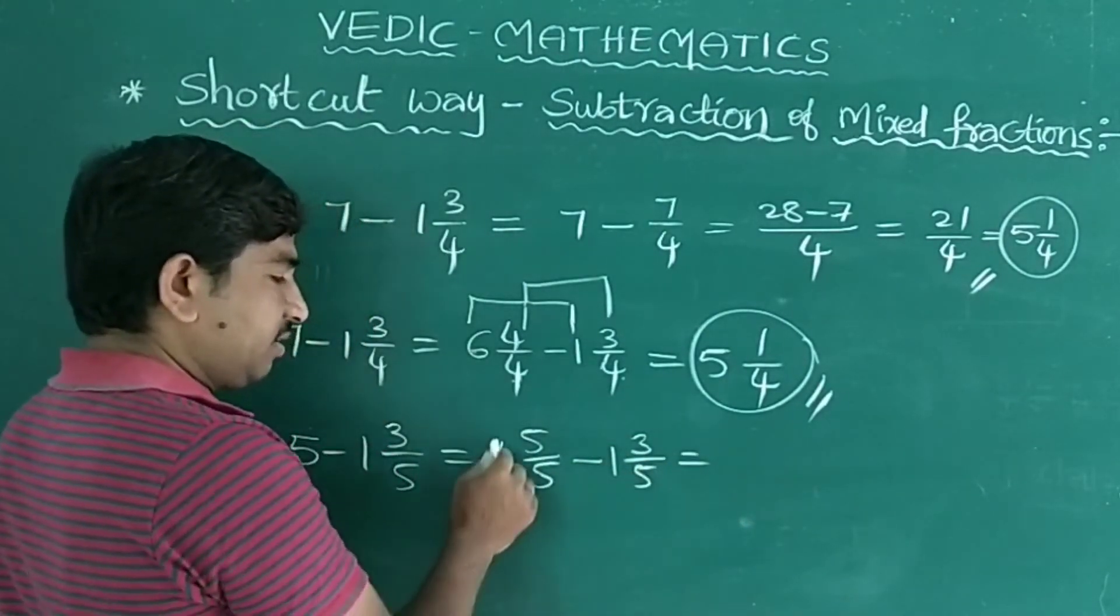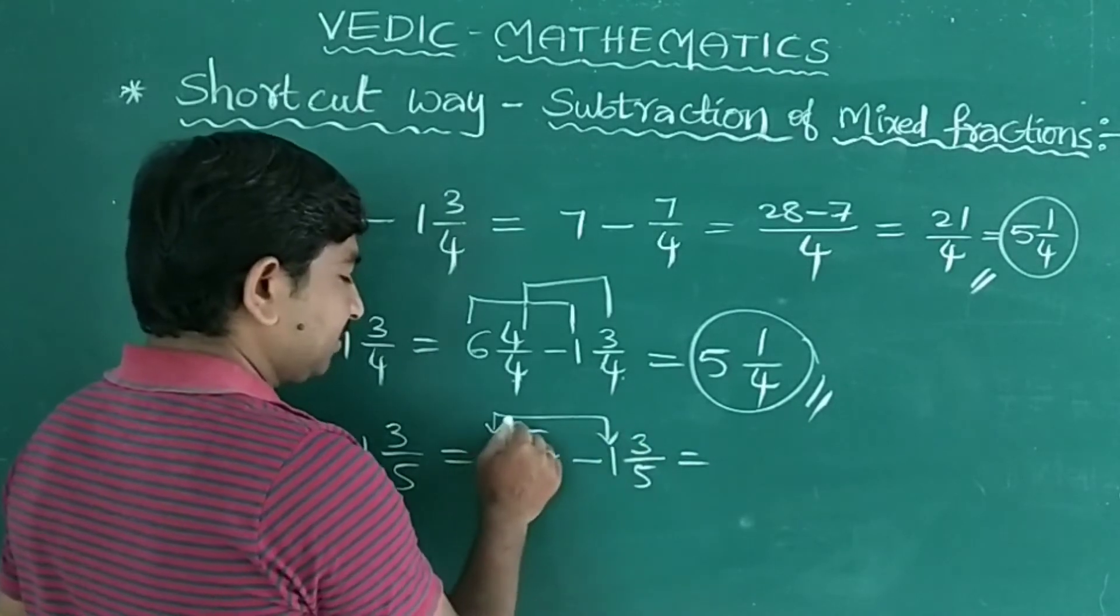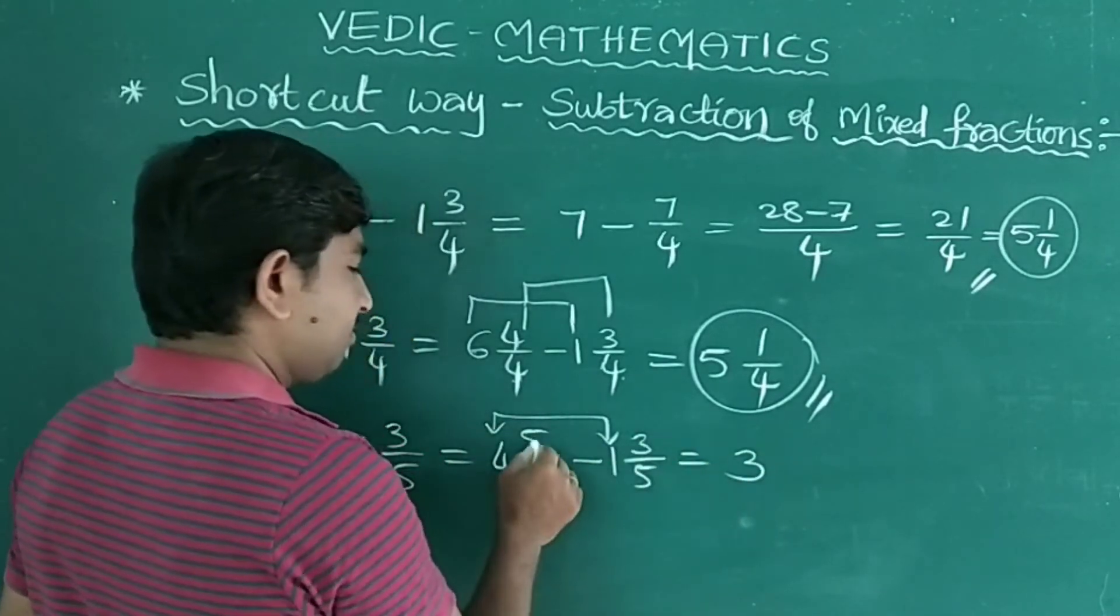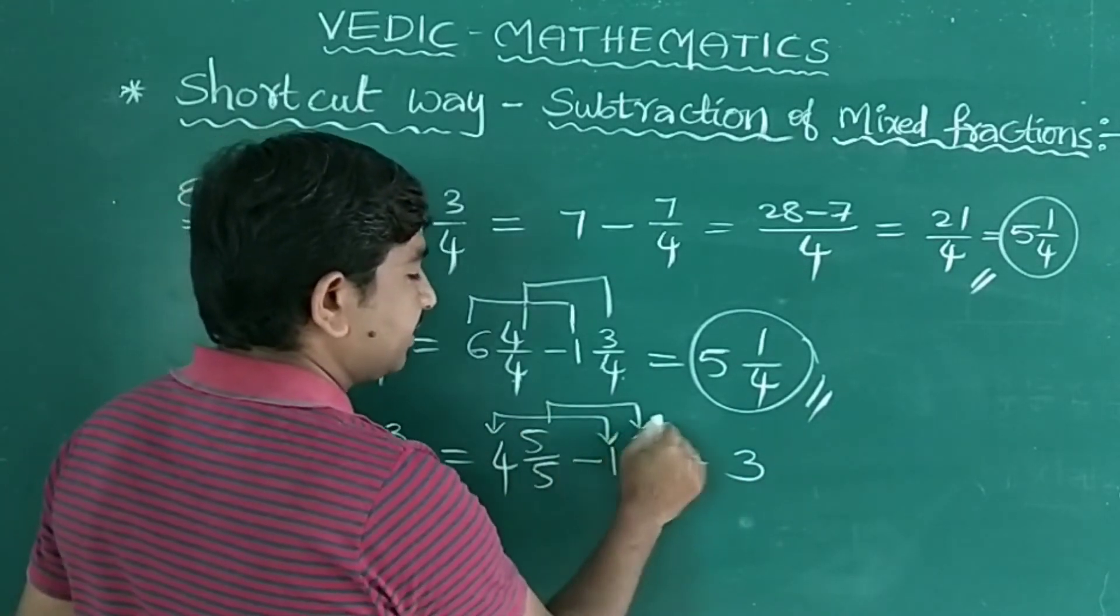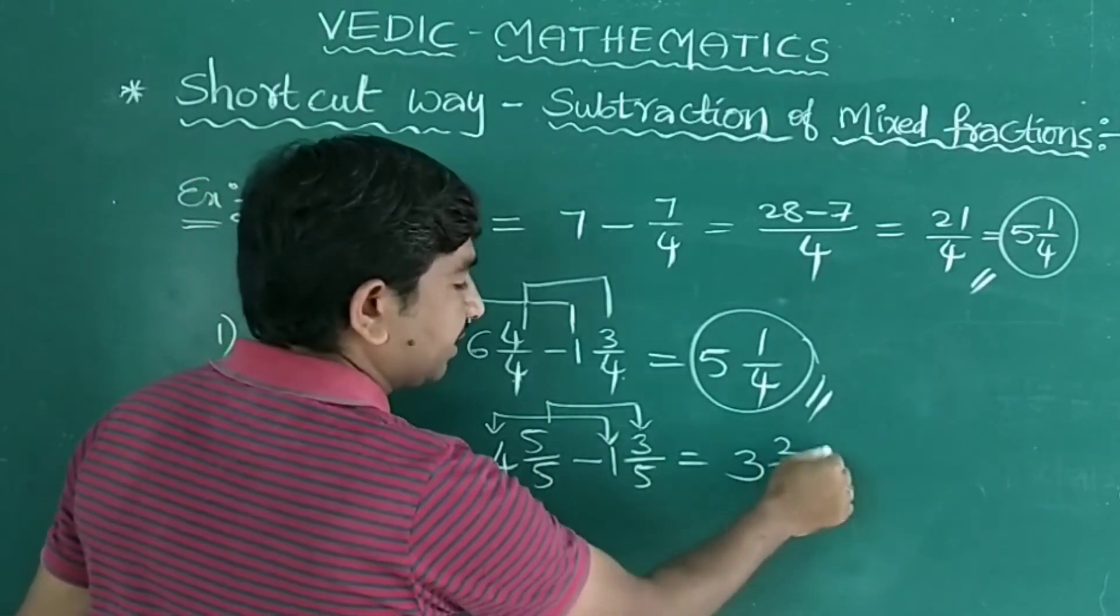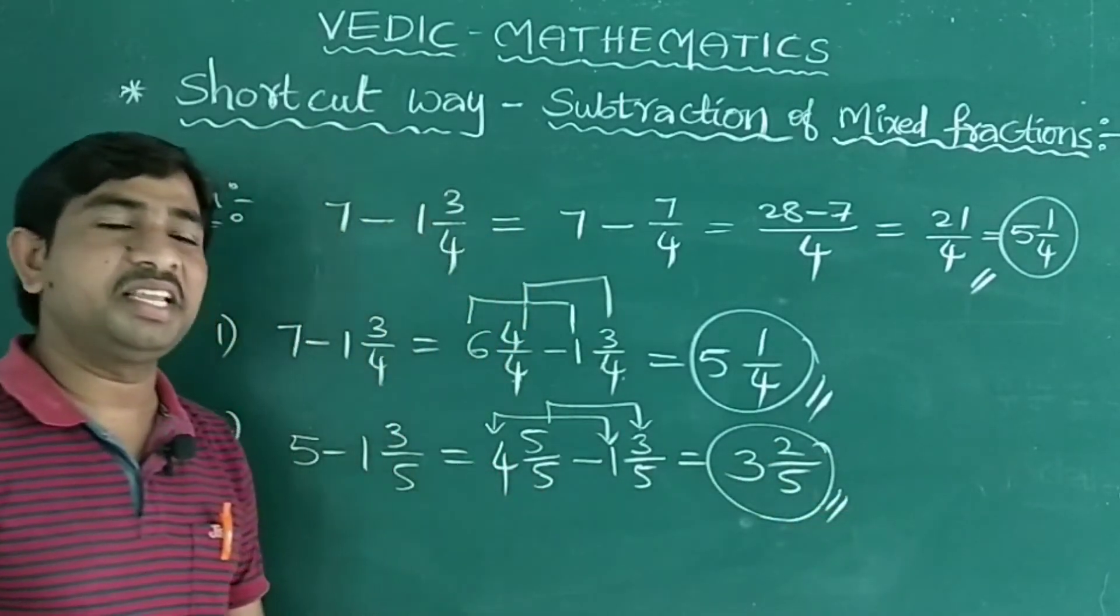So here, what is that? Again subtract these two. 4 minus 1 is 3, 5 minus 3 is 2, and what is the denominator? 5. So this is the answer, very easy.